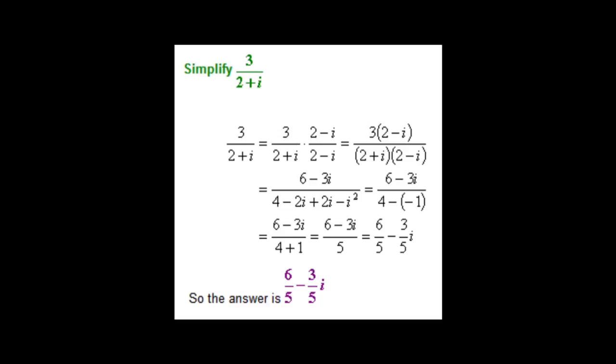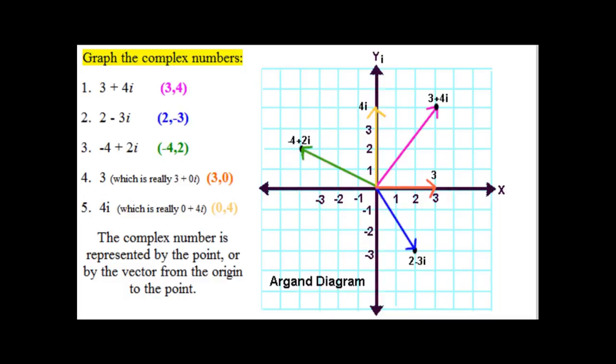When graphing complex numbers, you can't use a normal set of axes. Instead, the x-axis will represent real numbers while the y-axis represents imaginary numbers. A complex number a plus bi is the point ab, or the vector from the origin to the point ab. Here are some examples of graphs of complex numbers.